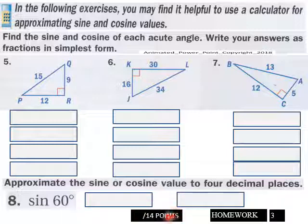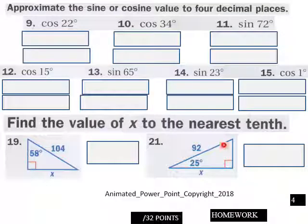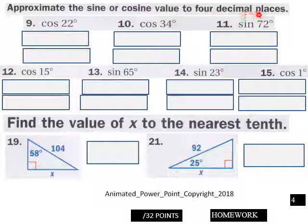Page four, again approximate the sine or cosine value to four decimal places. Find both cosine and sine and put those in here, and do the same thing down here. Find sine and cosine for each one of these.